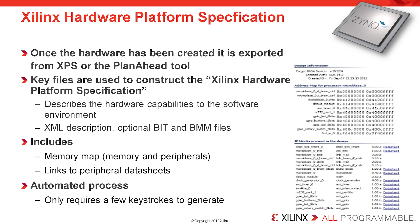Once the hardware has been created, it is exported from XPS or the PlanAhead tool. The key files used to construct a Xilinx hardware platform specification describe the hardware capabilities to the software environment. This includes an XML description, an optional bit file, and an optional BMM file. This description also is shown as a memory map showing both the memory regions and the peripherals, and also provides a quick link to the peripheral data sheets. Importantly, this is an automated process requiring only a few keystrokes to generate.